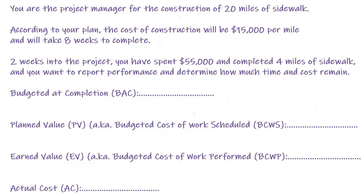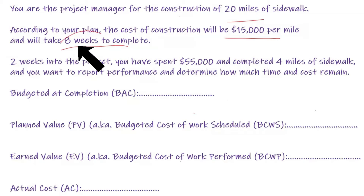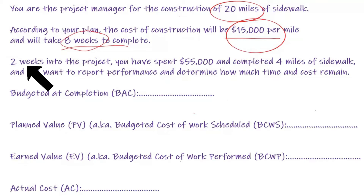I'm going to use an example of a construction project. Imagine that you're the project manager for the construction of 20 miles of sidewalk. According to your plan, the cost of construction will be $15,000 per mile and it's going to take eight weeks to complete. The scope of the work is 20 miles and the cost is $15,000 per mile.